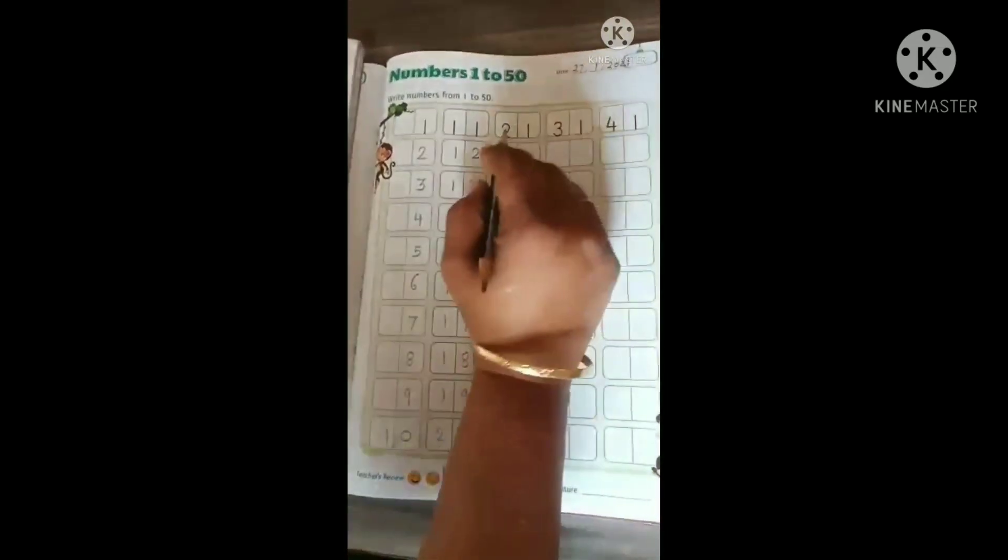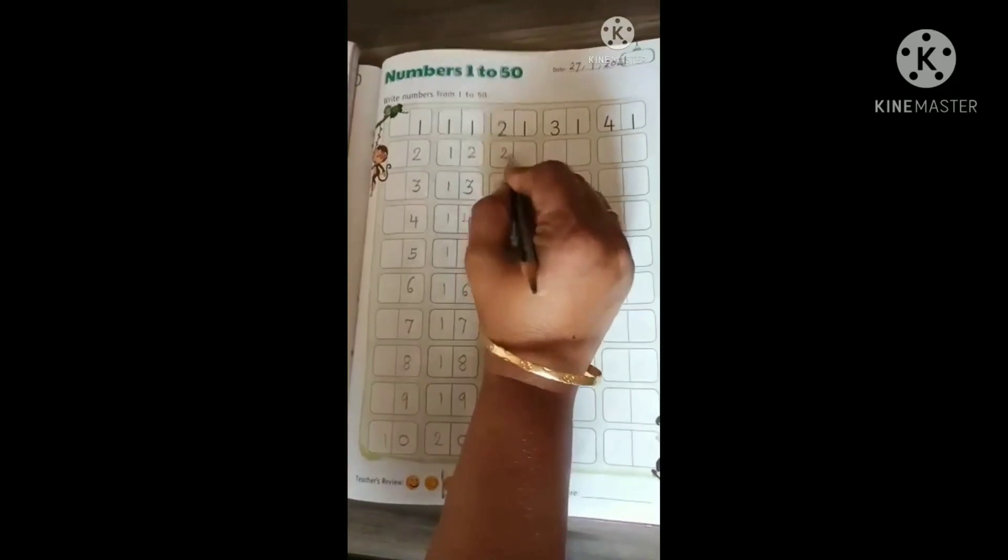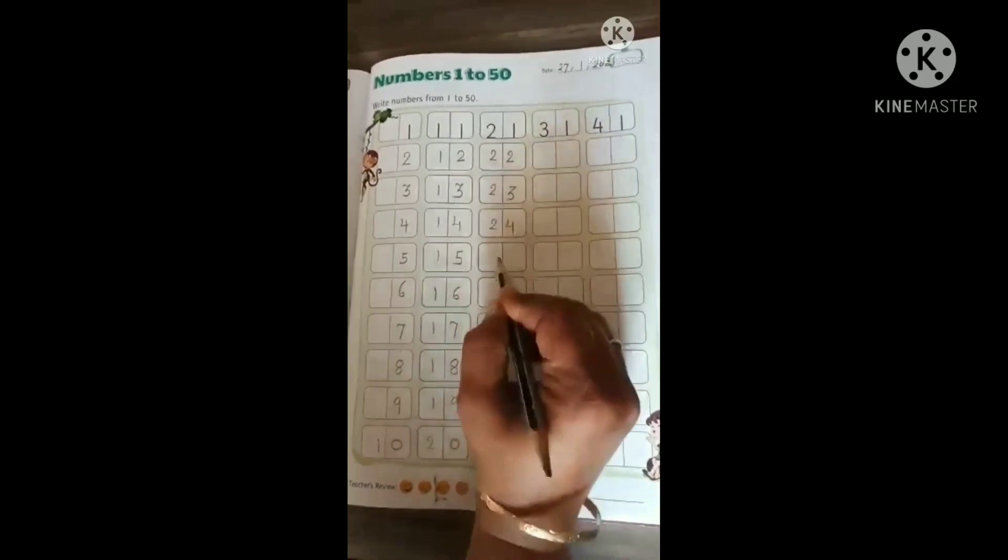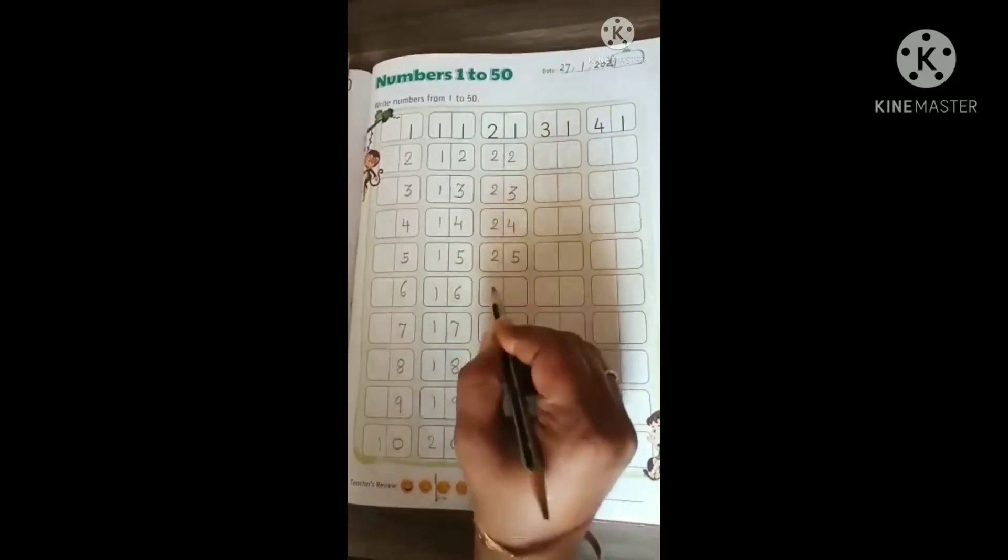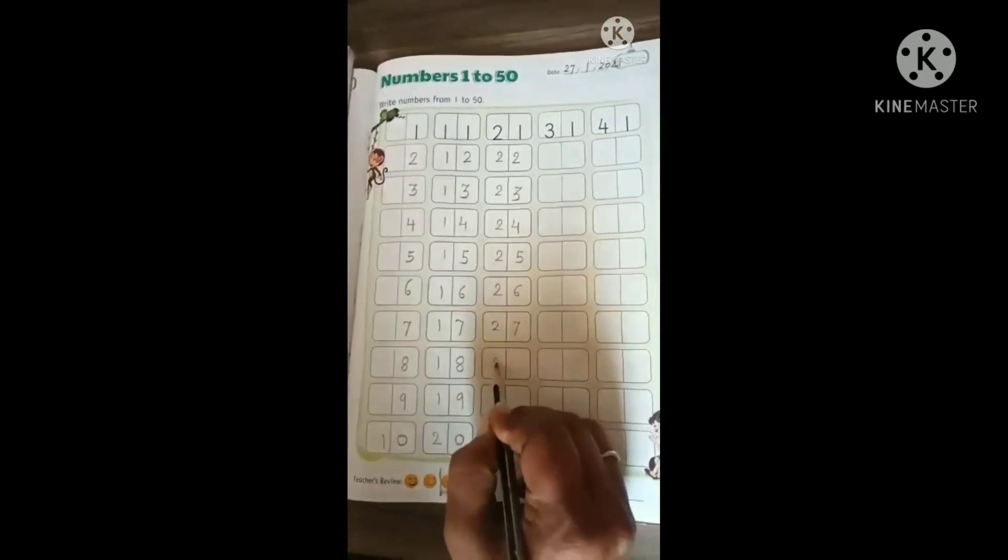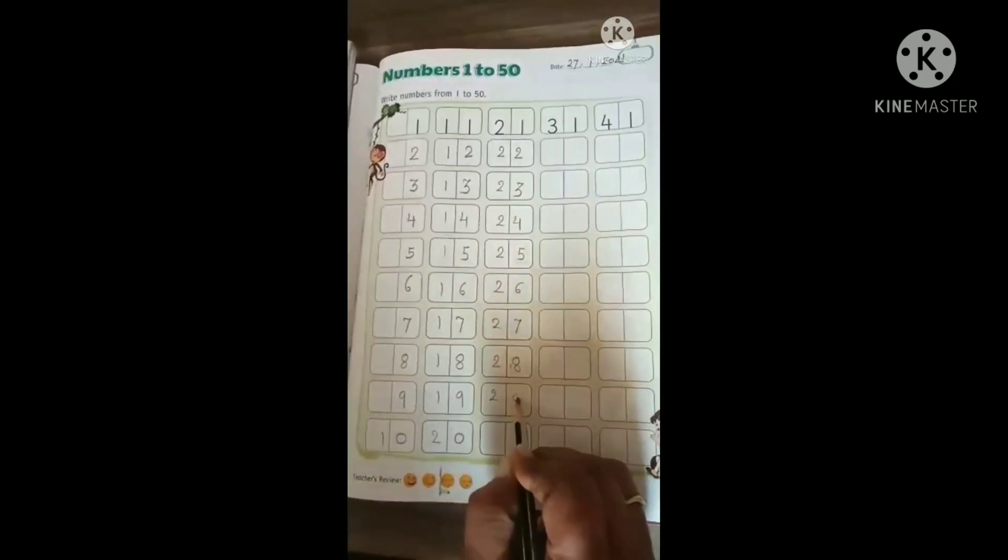20 after 21, 22, 23, 24, 25, 26, 27, 28, 29.